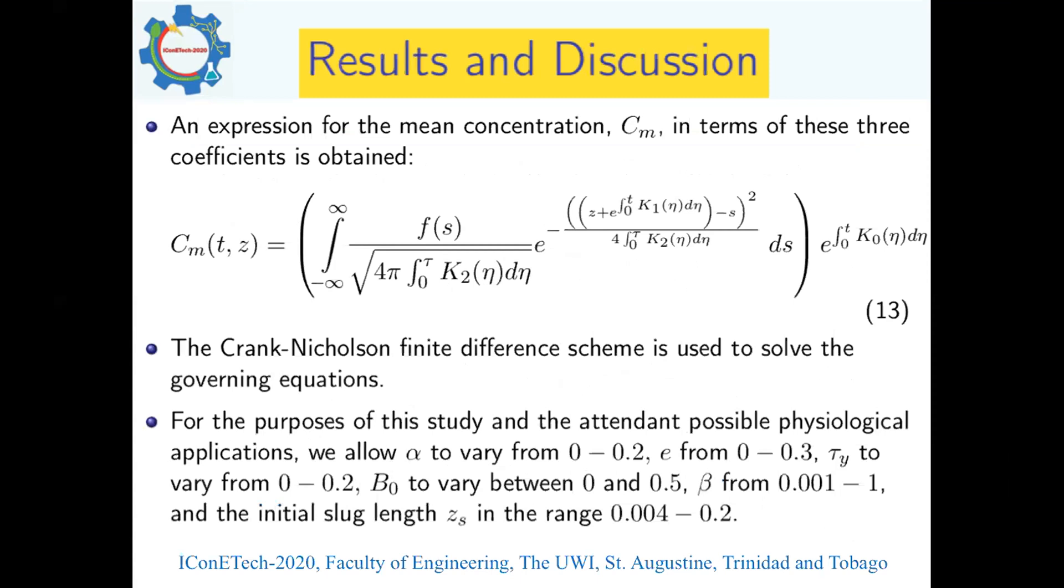We obtained an expression for the mean concentration in terms of the three aforementioned coefficients, represented by equation 13. We used the Crank-Nicolson finite difference scheme to solve the governing equations. For this study and its attendant physiological applications, we use real-life values: alpha (the Womersley frequency parameter) varies from 0 to 0.2, the fluctuating pressure gradient component e from 0 to 0.3, the yield stress tau_y between 0 and 0.2, the body acceleration component B_0 between 0 and 0.5, the exchange parameter beta at the tube wall between 0.001 and 1, and the initial slug length z_s ranges from 0.004 to 0.2.